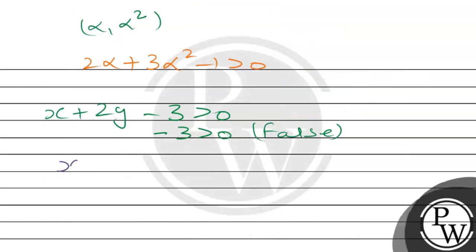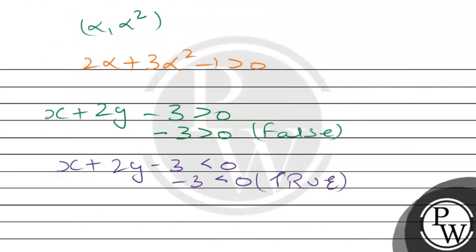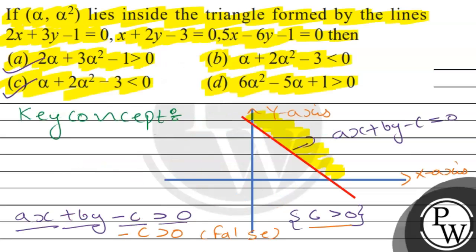So we check x plus 2y minus 3 less than 0. For the point to lie inside the triangle, we need: alpha plus 2 times alpha square minus 3 less than 0. This means option C is correct. Now let's check the third line.